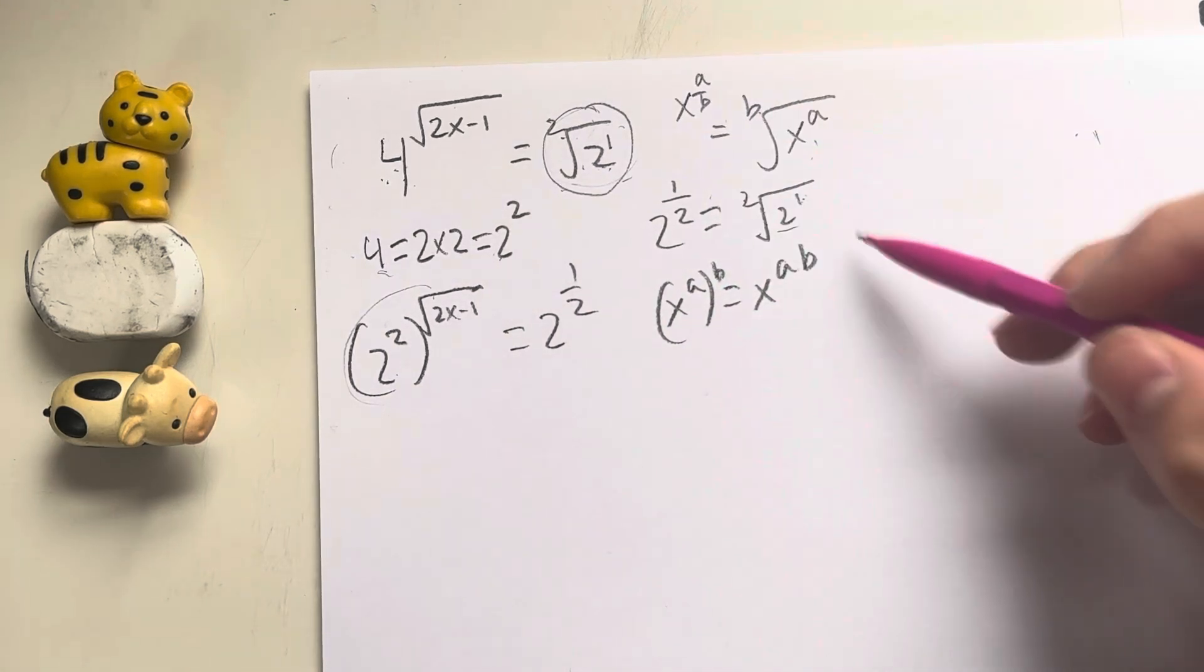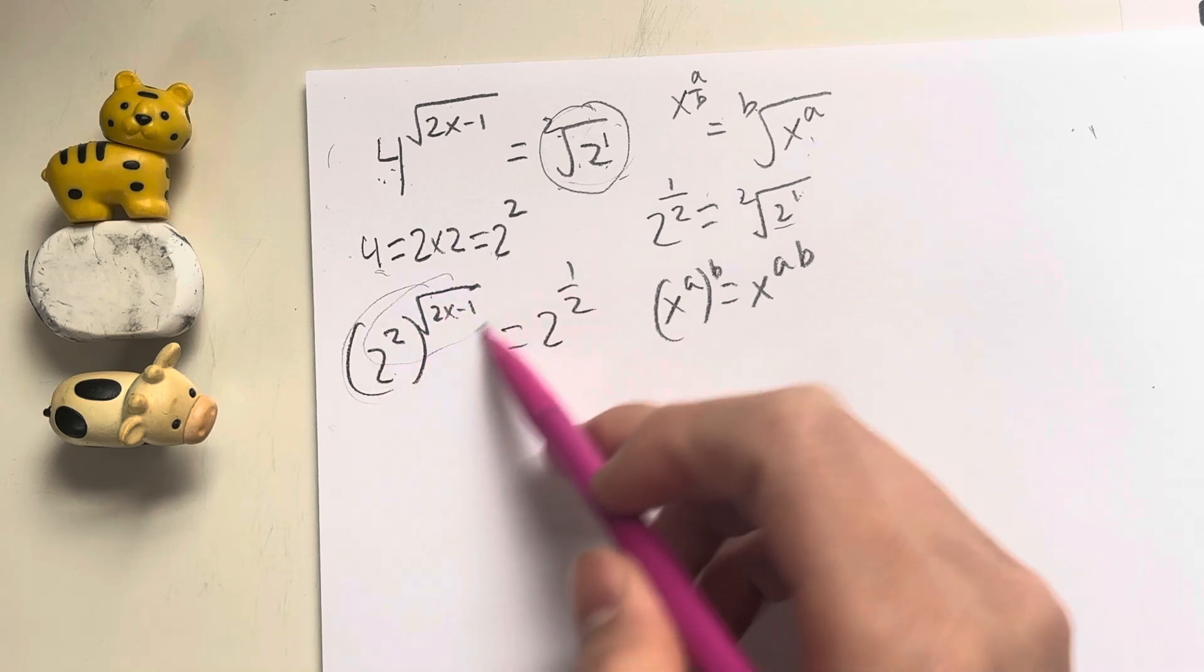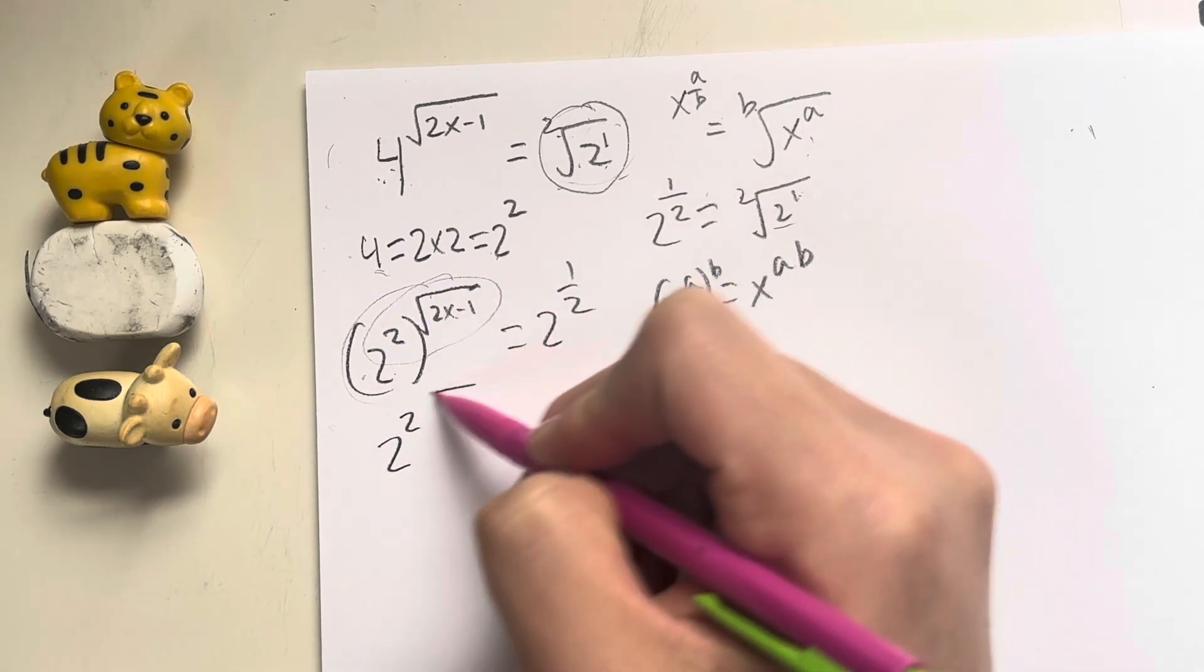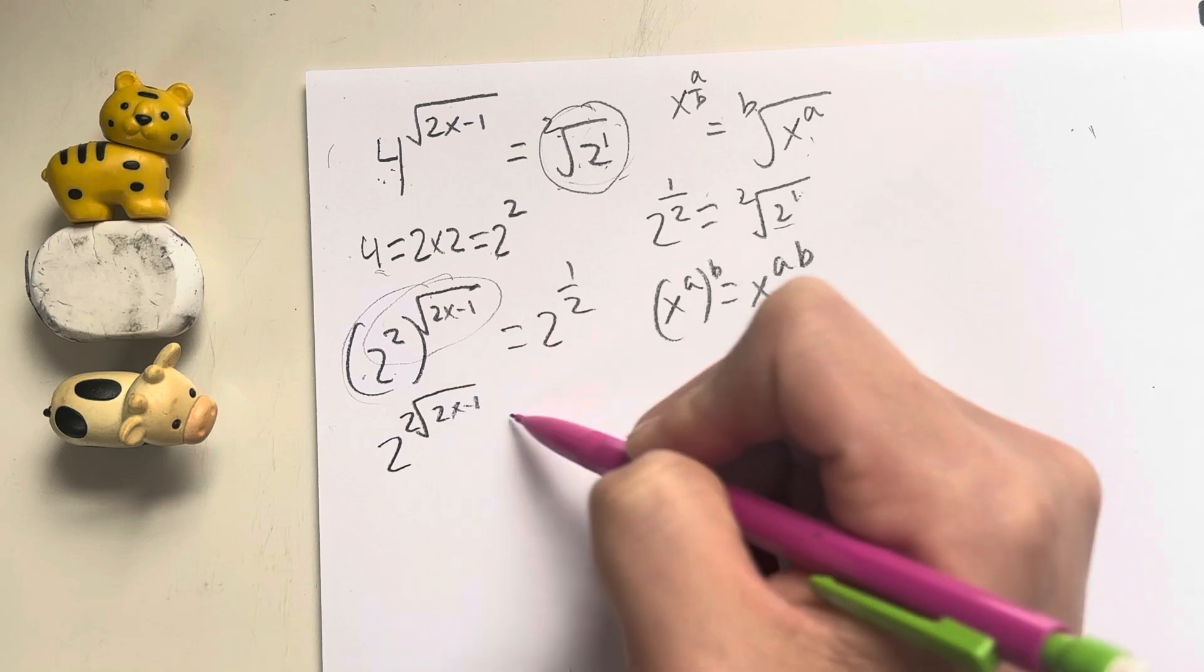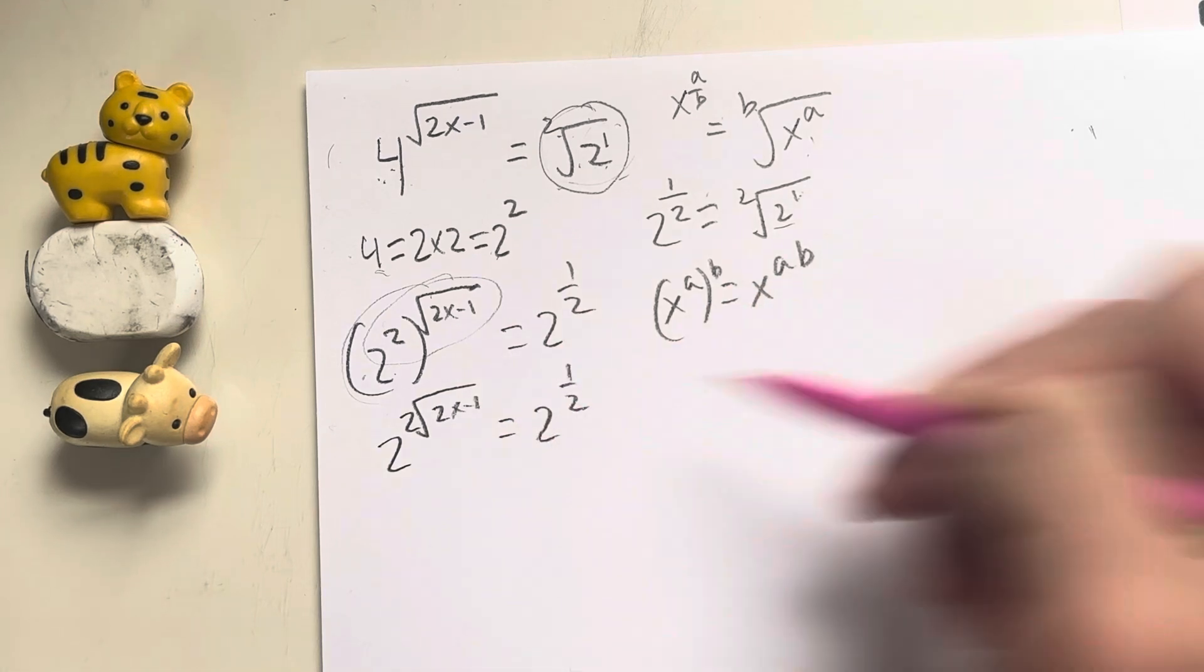So a lot of rules we have to remember. Basically, we have to distribute this right here. So that gives me 2 to the 2 times 2x minus 1, and that's equal to 2 to the 1 half.